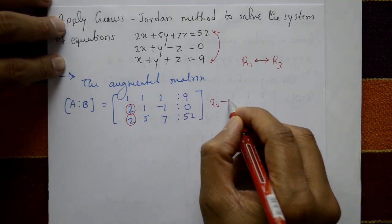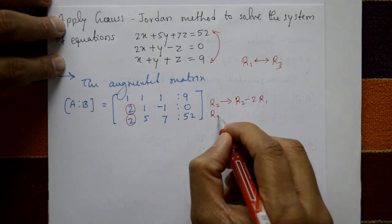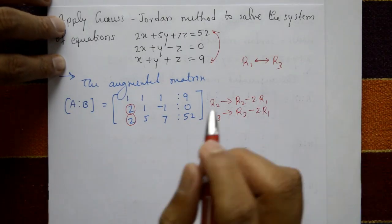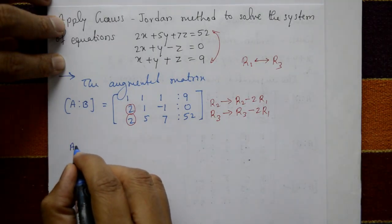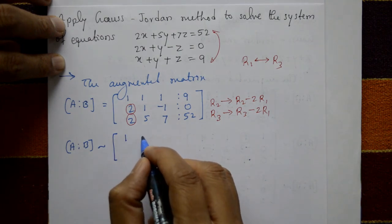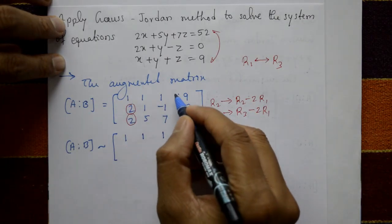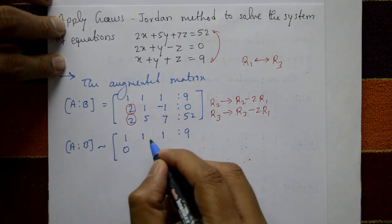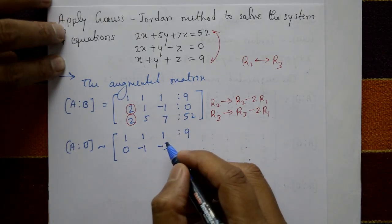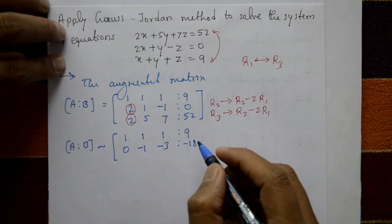Apply R2 = R2 - 2R1 and R3 = R3 - 2R1. The augmented matrix is now equivalent: the first row is unchanged. For R2, multiply R1 by -2 and add: the first element becomes 0, then 1 - 2 = -1, and -18.